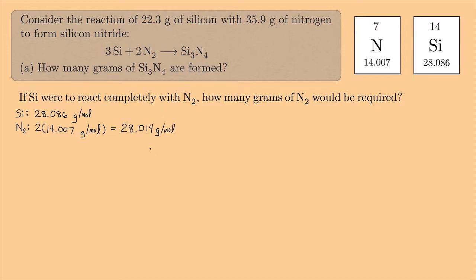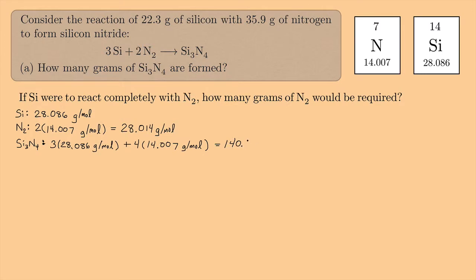And last, we have Si₃N₄. That's going to be 3 times 28.086 grams per mole, plus 4 times 14.007 grams per mole. And if you do that on a calculator, you end up getting 140.286 grams per mole.